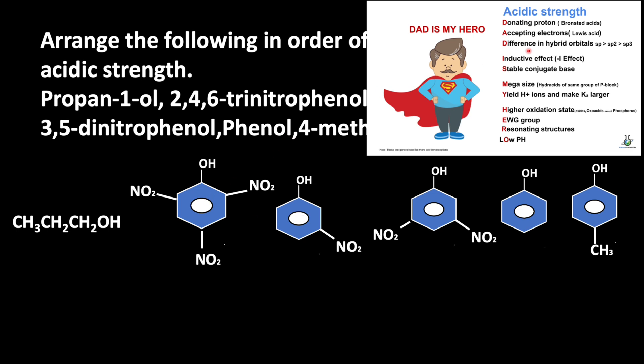According to that mnemonic, difference in hybrid orbital means SP, SP2 and SP3. So that is why SP3 carbon has the lowest acidic strength.